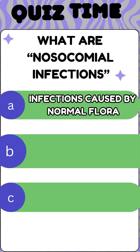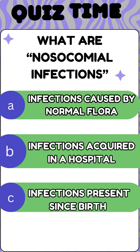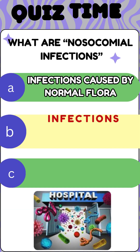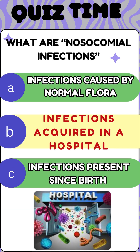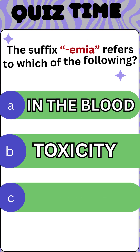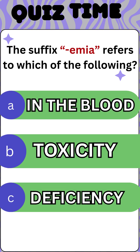Next, what are nosocomial infections? Infections caused by normal flora, infections acquired in a hospital, or infections that present in spurts? The answer is infections acquired in hospitals. Nosocomial infections are not present at the time of admission but develop during the hospital stay, typically appearing 48 hours or more after admission.